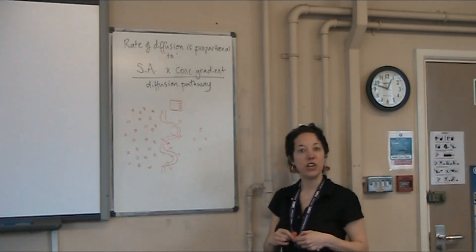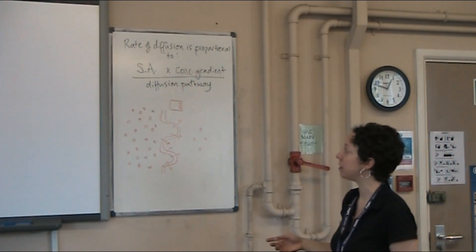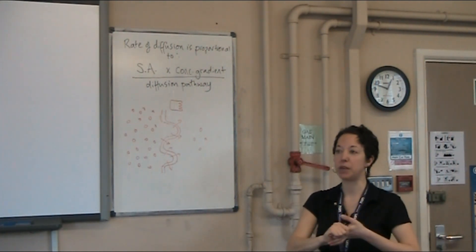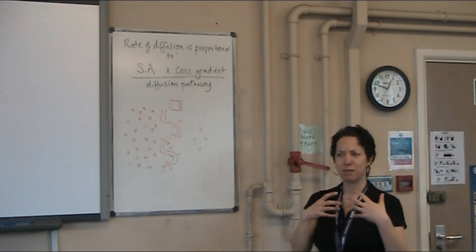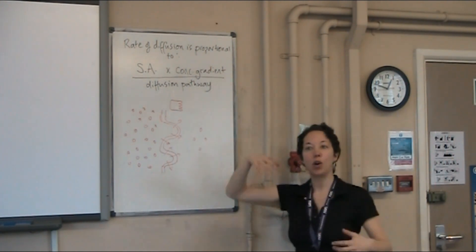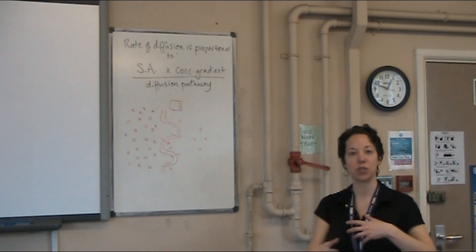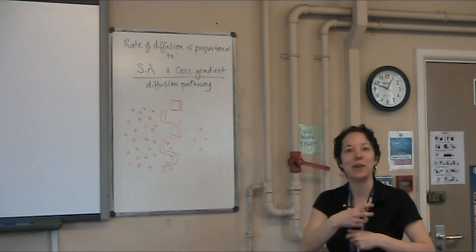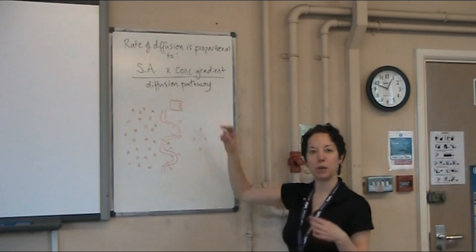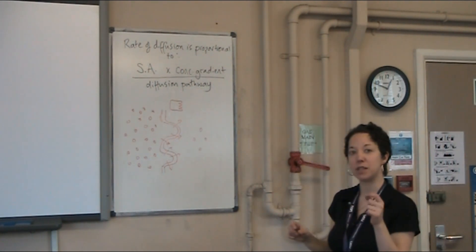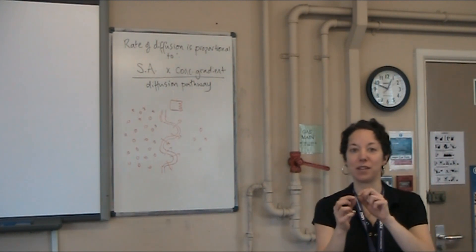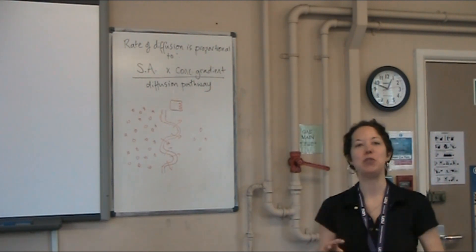Fish gills — another gas exchange surface. Surface area is maximised because each fish gill has many filaments, and each filament has many lamellae, giving a vast surface area for gas exchange. The concentration gradient is maintained by the constant flow of water across the gills, which constantly replenishes oxygen, while oxygen is taken away on the other side by red blood cells in the capillaries. And the diffusion pathway? The walls of the lamellae — the gas exchange surface — are only one cell thick. Just like the alveoli walls. There are so many different applications, too numerous to go into now.